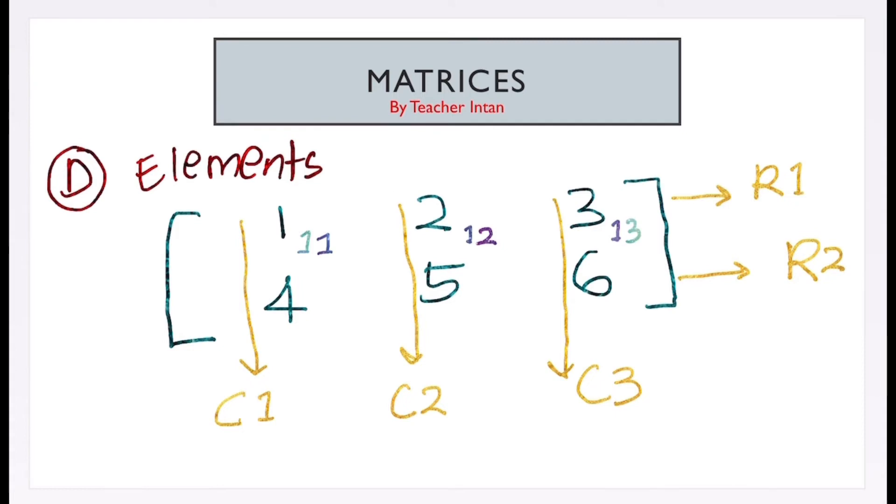And next, number 4 there is at row 2 and column 1. So, the element is a21. And number 5 there is at second row and second column. So, the element is a22. And number 6, it is at second row and third column. So, we write down a23 as the element. So, class, all good?